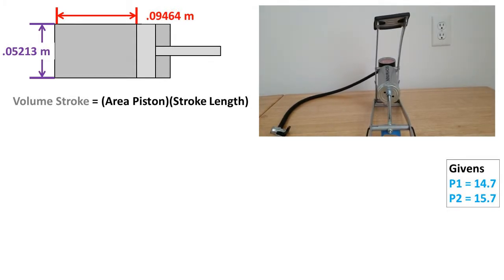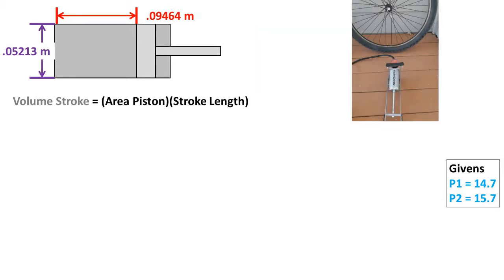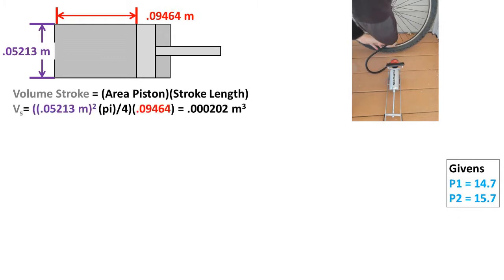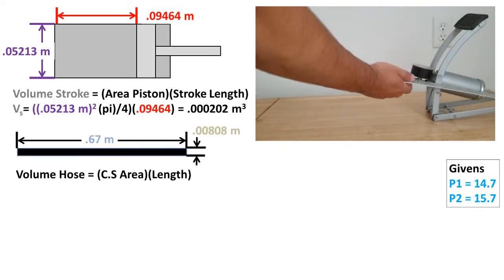We can plug into the volume of the cylinder formula, which is area of the piston times the stroke length of the piston, to get the volume of the stroke. Plugging in our numbers, we get a stroke volume of 0.000202 meters cubed.